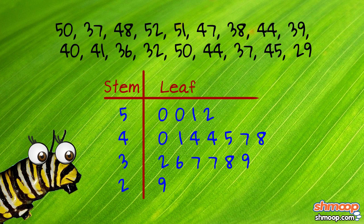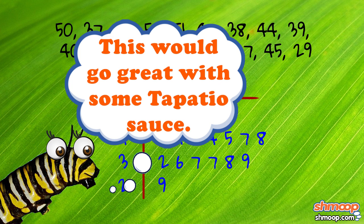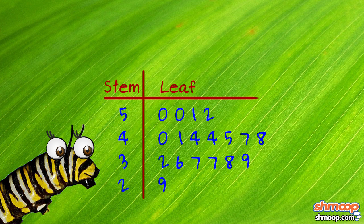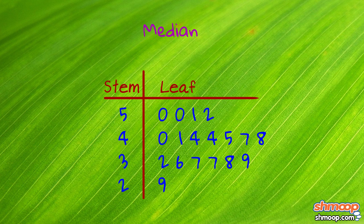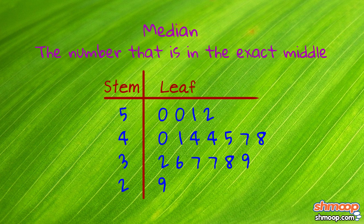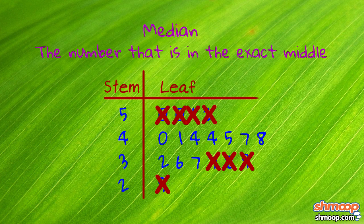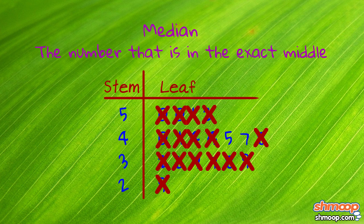Now that Cat has finished organizing today's meal, she decides that she wants to start by eating the leaf with the median value — in other words, the number that is in the exact middle of all the other numbers. To find the middle number, we can simply cross out one number from the top and then from the bottom until we meet in the middle.